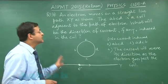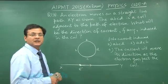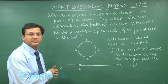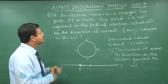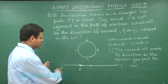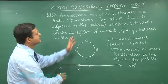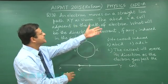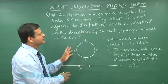In question 138, which is a very standard question also found in our study packages, an electron moves on a straight line path XY as shown. The electron is approaching a coil — the ABCD coil — which is adjacent to the path of the electron.